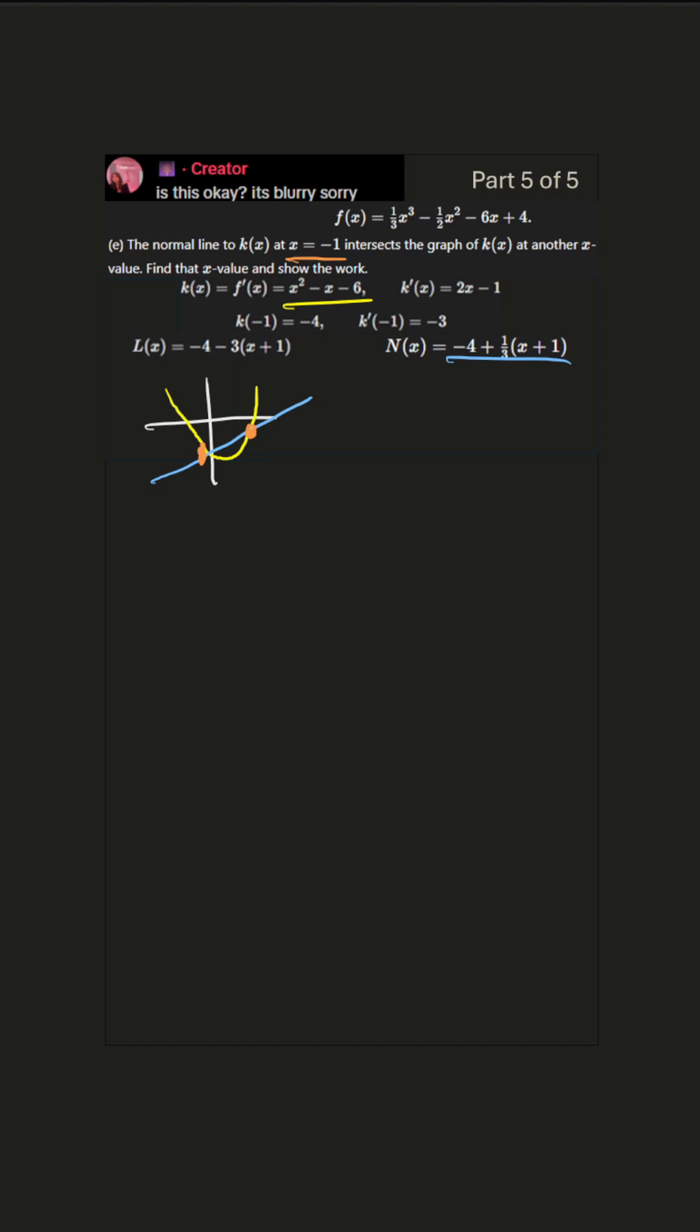So how do we find that second x value where they intersect? Well, first thing we do is set the parabola equal to the line. Let's do that: negative 4 plus 1/3 times x plus 1. And then we can simplify a bit: x squared minus x minus 6 equals negative 4, distribute the 1/3 so 1/3 x plus 1/3.